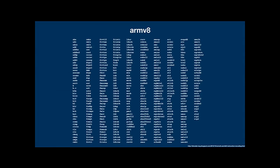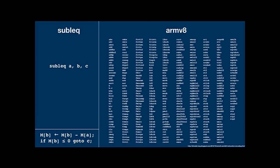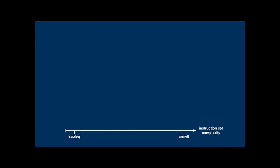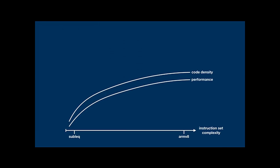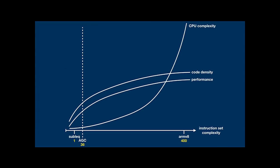Machine code instruction sets vary widely. The instruction set of a modern ARM processor, mainly optimized for runtime performance, consists of about 400 instructions. SubLeq is a language mostly of academic interest showing that a single instruction can be enough to solve the same problems as all other Turing-complete languages. While a more complex instruction set can achieve higher code density and higher performance, it also generally means the CPU will be drastically more complex. A computer from the early 1960s consisted of only a few thousand transistors, as opposed to today's billions, which is why a middle ground was the sweet spot for the AGC.